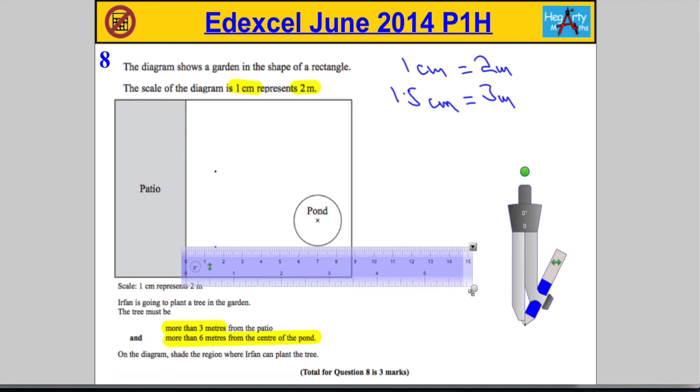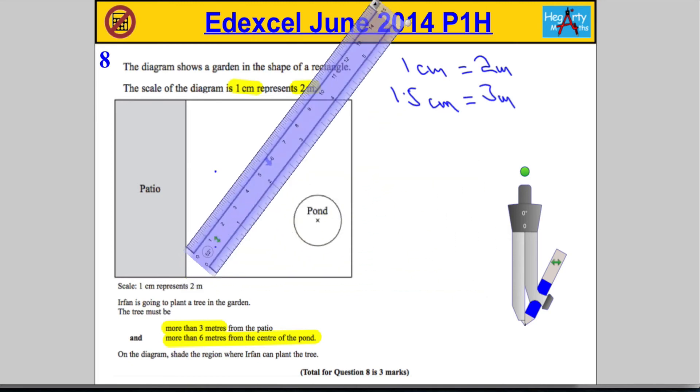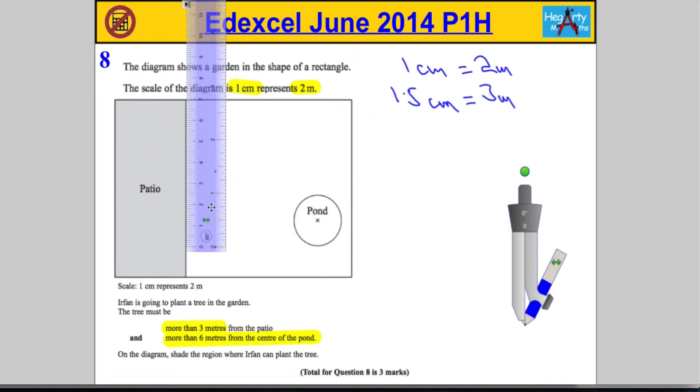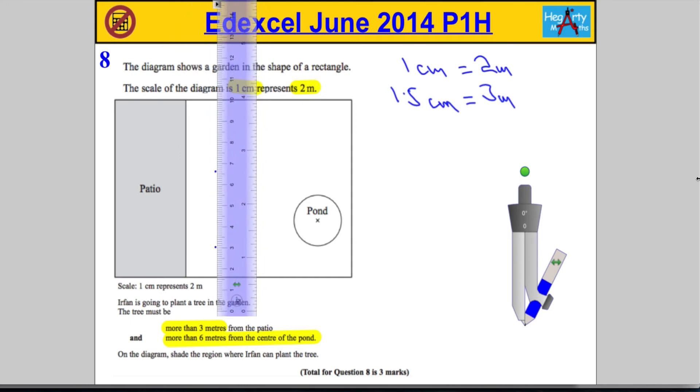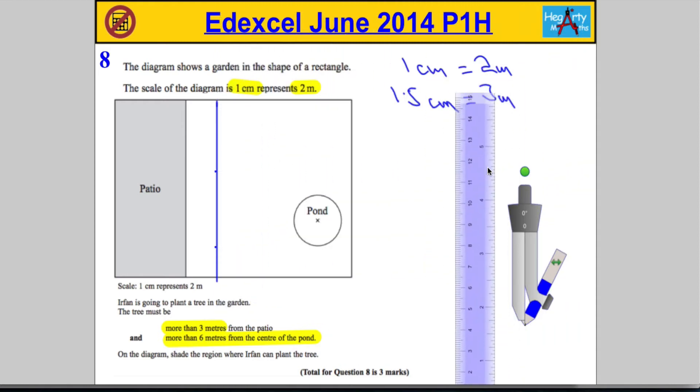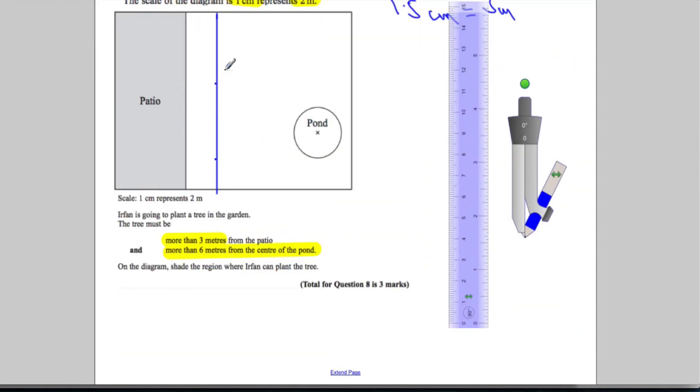Then what we're going to do is turn the ruler and draw a straight line through those two points that we've just marked. So there we go. There's a straight line. Now I know that the tree has to be to the right of the line, because that's more than 3 meters from the patio.